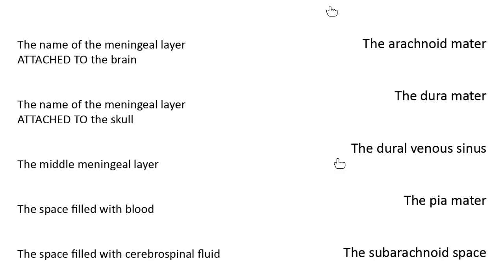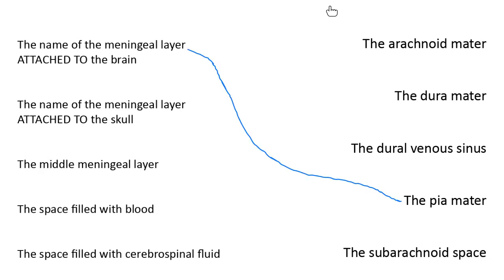The meningeal layer that is attached directly to the brain — the pia mater. The pia mater is the meningeal layer connected directly to the brain. Pia means merciful. This is the thinnest layer of the meninges and it's directly attached to the brain.